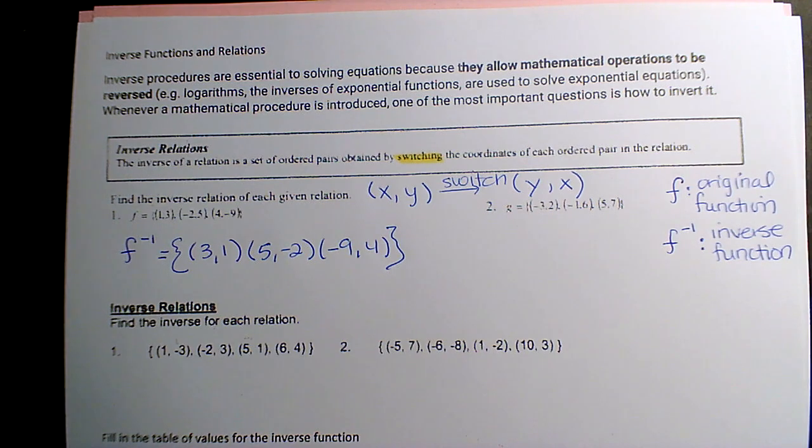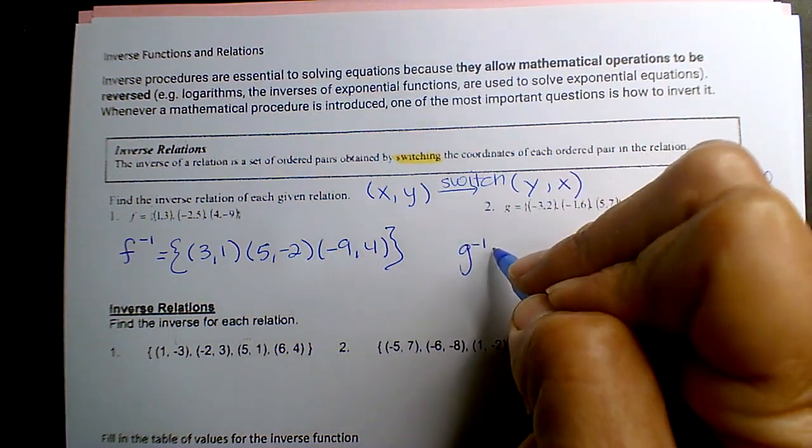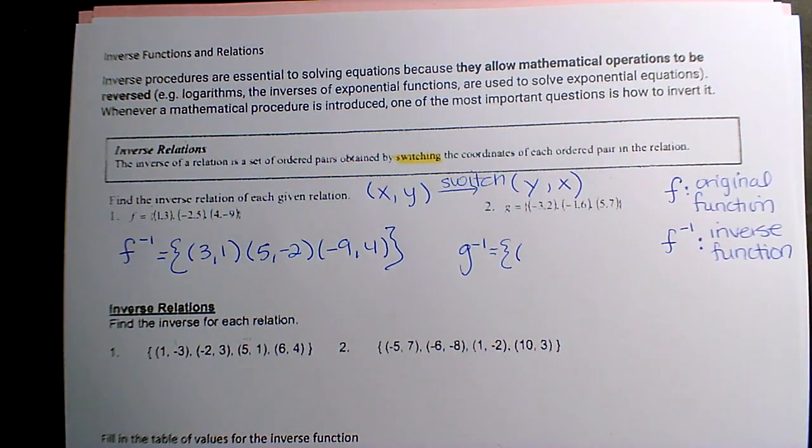Okay, so then G prime, right, inverse function of G is two negative three, six negative one, seven five. Right? Yeah, okay.